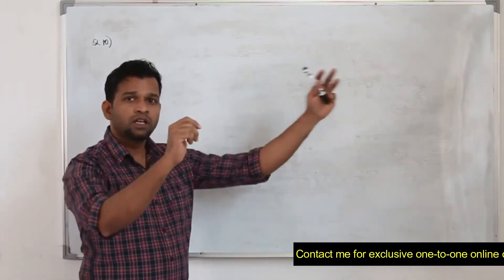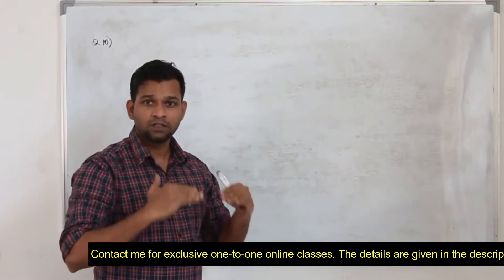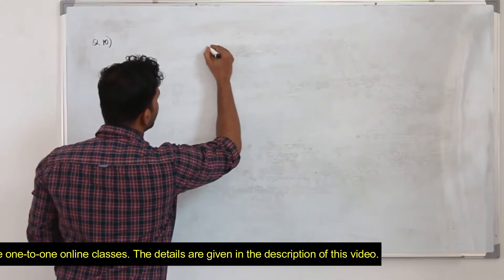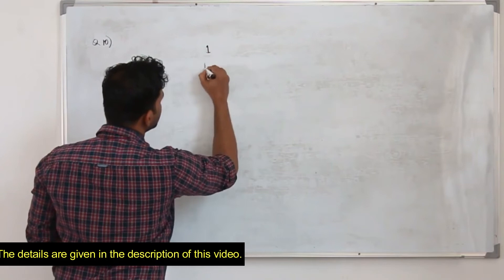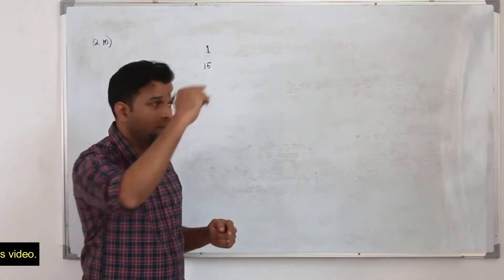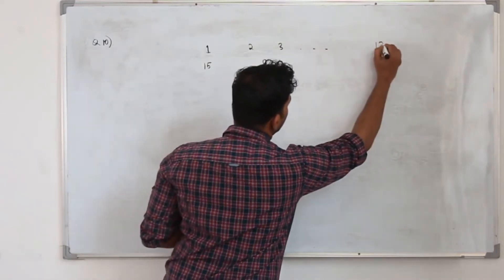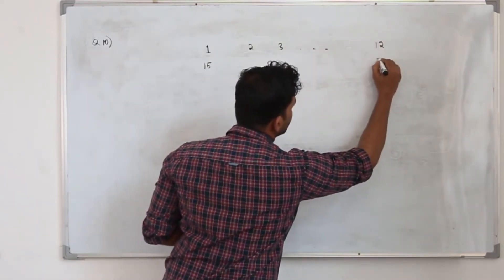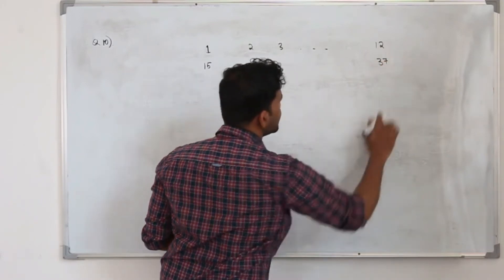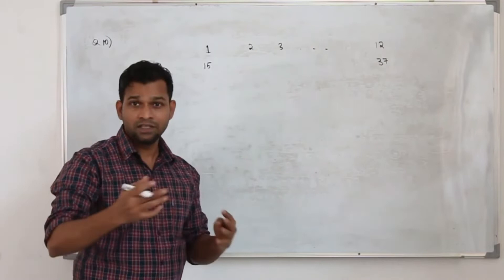Don't look at the question as a whole — we are going to break it down into smaller questions. So in week 1 he covers 15 km, and in week 12 he runs 37 km. That means he is gradually increasing his distance.